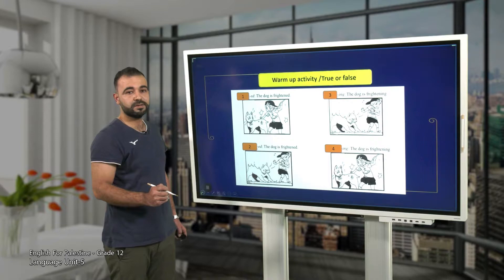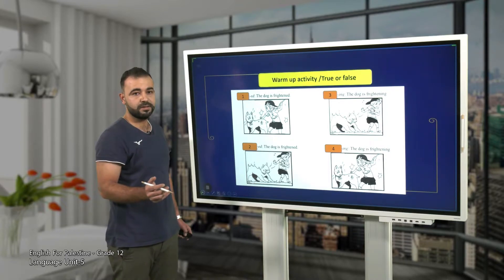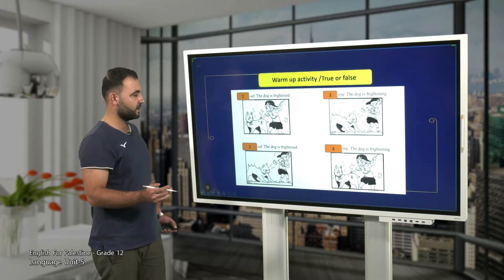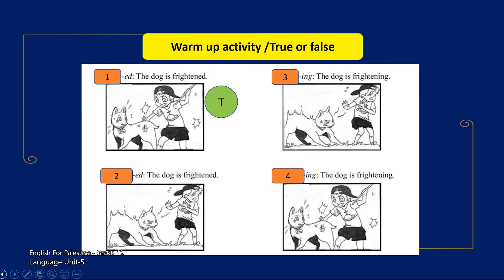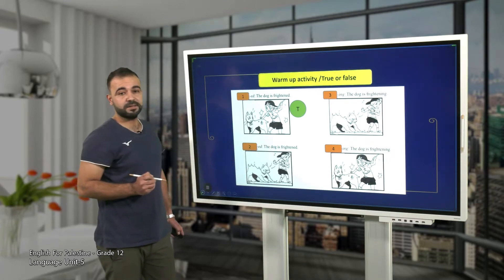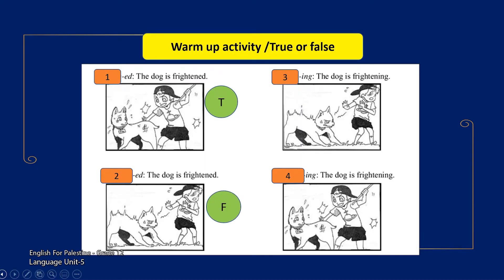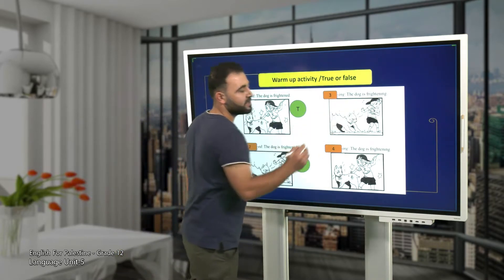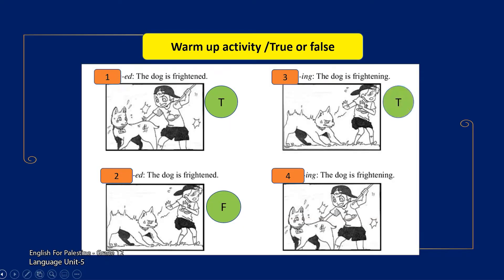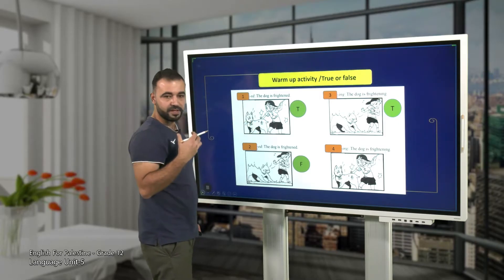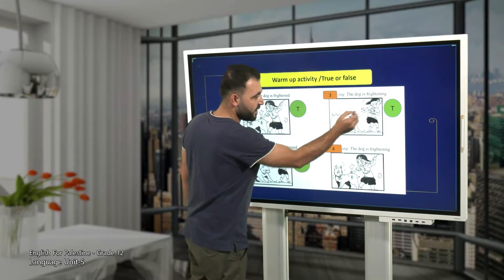What do you think — is the dog frightened or frightening? The answer is true: here the dog is frightened. Number two: the dog is frightened — is it frightened here? The answer is false, it's not frightened. Let's move to picture three: the dog is frightening. Is it correct? Yes, it's true.